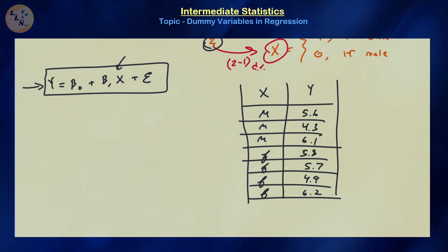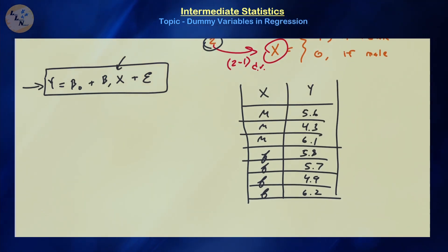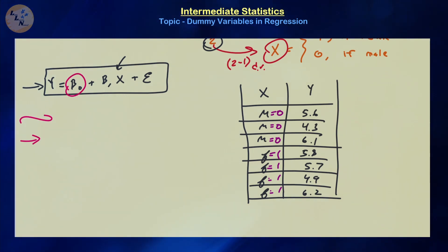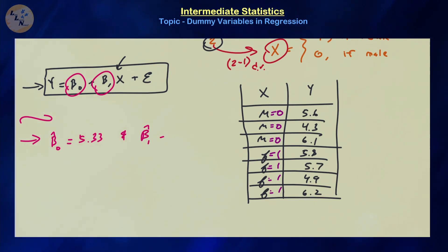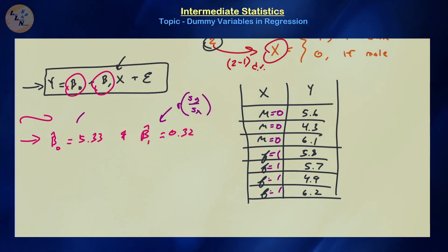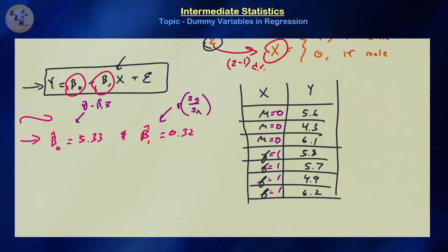From this data, we can find the parameter estimates. The estimate beta hat zero equals approximately 5.33, and the slope beta hat one is approximately 0.32. If you don't remember how to get those, recall that for simple linear regression, beta hat one equals r times the standard deviation of y divided by the standard deviation of x, and beta hat zero equals y-bar minus the slope times x-bar. For multiple linear regression, it's recommended to work in the linear algebra perspective.